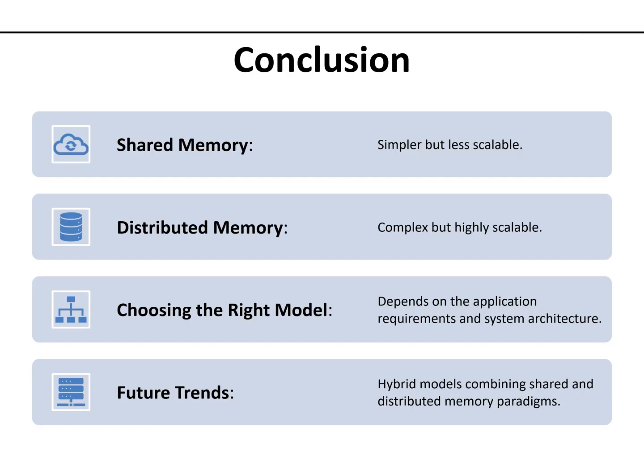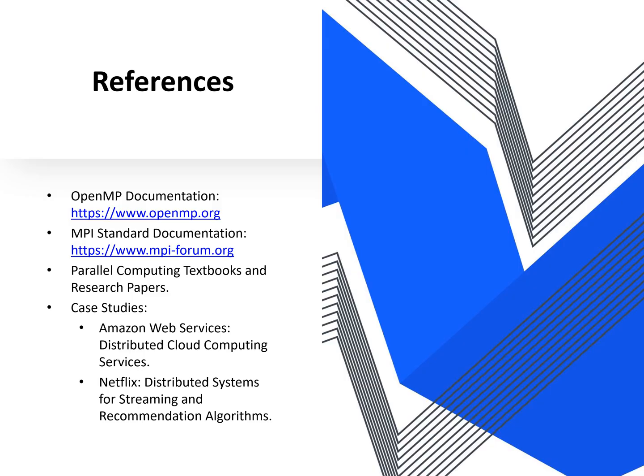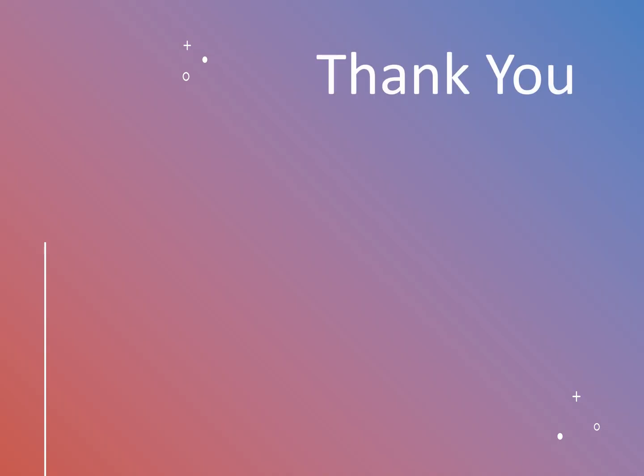To conclude, both shared memory and distributed memory play vital roles in parallel programming. Shared memory is simple and efficient for small systems but struggles with scalability. Distributed memory is scalable and ideal for large systems, though it is more complex to program. Understanding the strengths and challenges of each helps us choose the right approach. These are the references for OpenMP, MPI, and parallel programming. Thank you for your time, and I hope this presentation has clarified these important concepts.